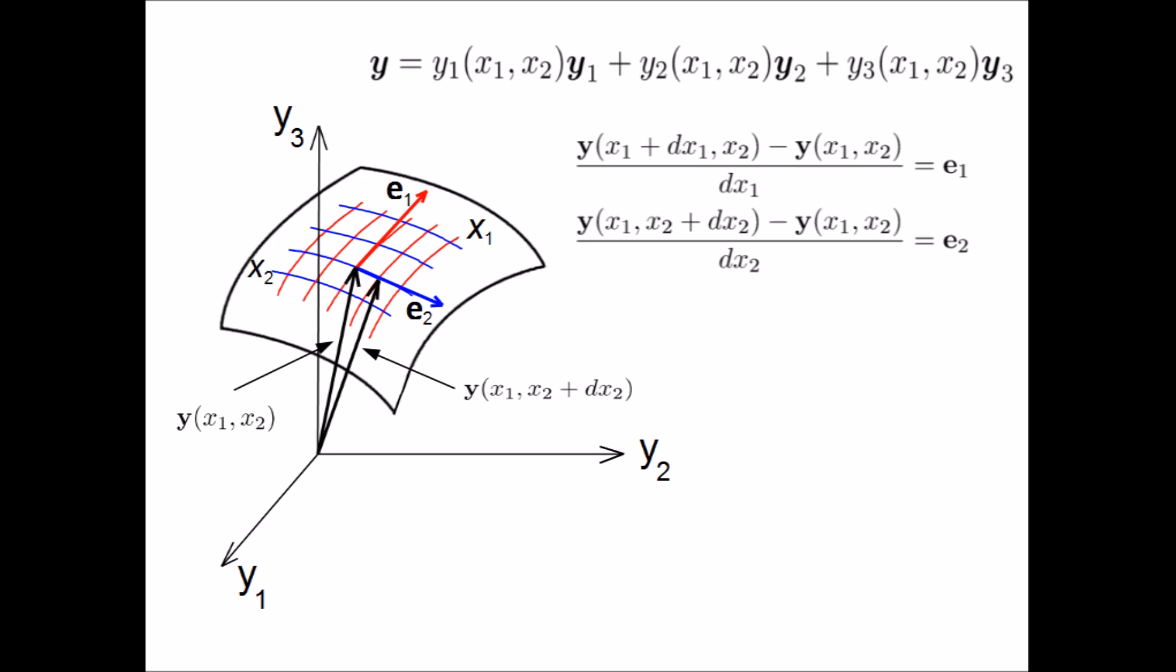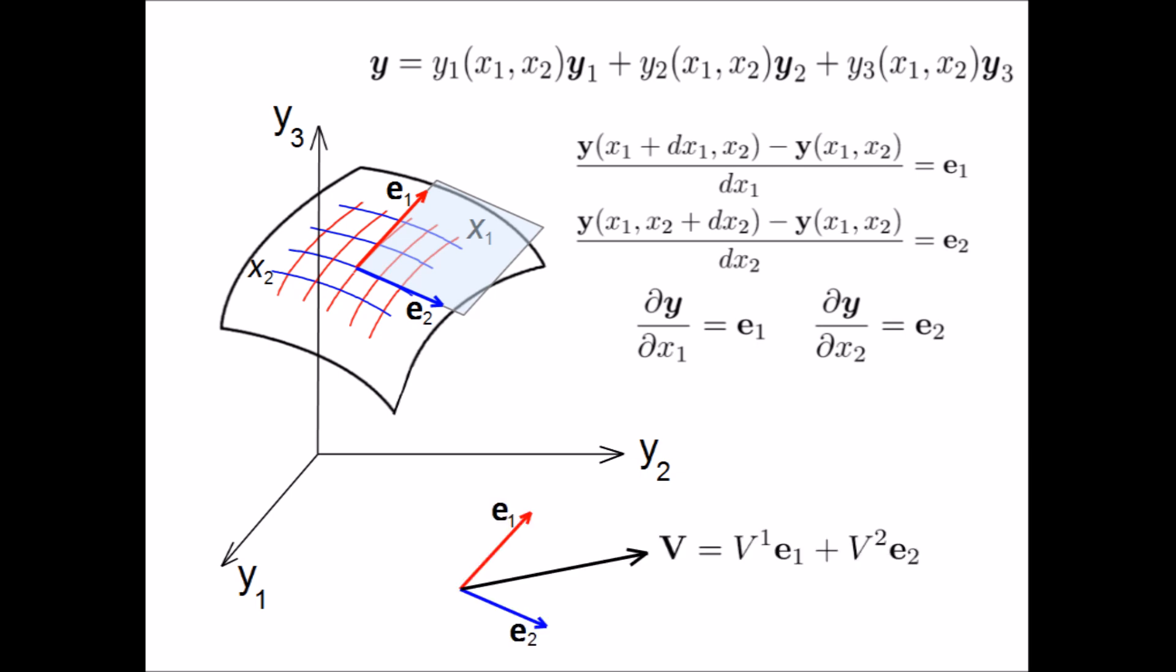e1 and e2 are merely the derivatives of y with respect to x1 and x2 respectively. They define a tangent plane at every point on the surface. Any vector that is tangent to the surface can be therefore expressed as a linear combination of e1 and e2, which is why they are referred to as bases.